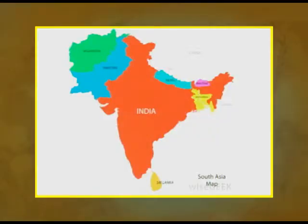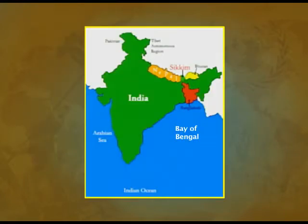Today we will discuss the process and struggle of establishing democracy in Bangladesh, the nature of the relationship between India and Bangladesh, and the areas of conflict and cooperation between the two countries. As you can see in this map, Bangladesh is shown in yellow, surrounded by India from three sides. A small part touches Myanmar and on the south it touches the Bay of Bengal.